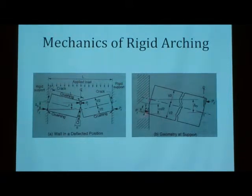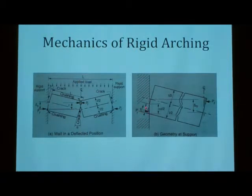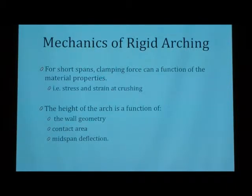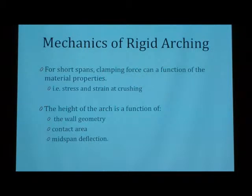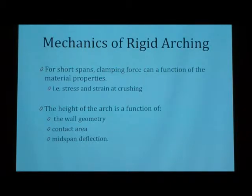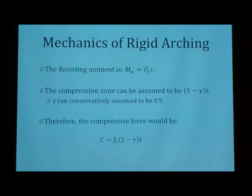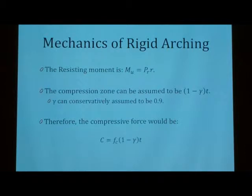And that's just kind of the free-body diagram of it as well, with the compression zone right there, which is where concrete is going to crush against the wall. Basically, for short spans, the clamping force is really due to the material properties and stress-strain relationships for crushing the masonry. And the height of it is a function of the wall geometry — the width of it, the height of the actual arch, as well as the contact area for the compression zone and the mid-span deflection. And like I said earlier, the resisting moment is just the compression at the middle multiplied by the lever arm.